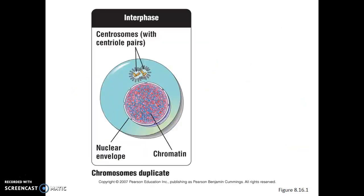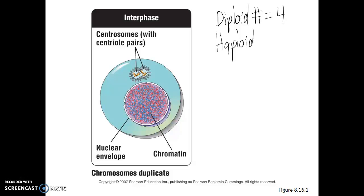Let's look at these stages again, this time with an example in which the diploid number is 4 and the haploid number is 2. Starting at interphase, before the chromosomes have condensed, we see the chromatin is just a diffuse mass of DNA. Yet at interphase the DNA is duplicated — all those chromosomes are duplicated — and we'll see those duplicated chromosomes once we start going through the first division.